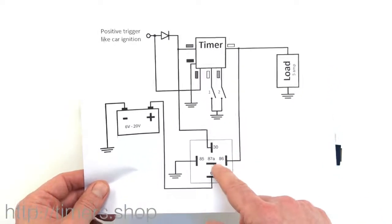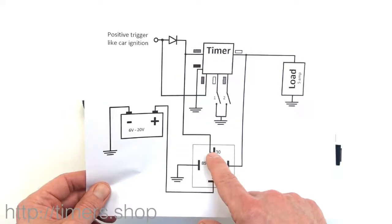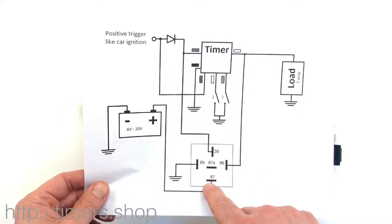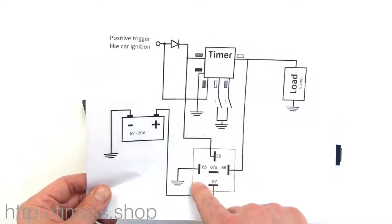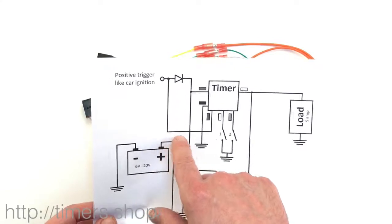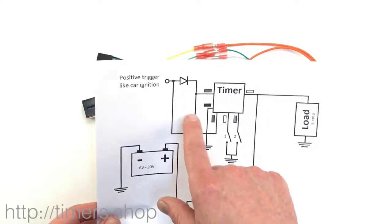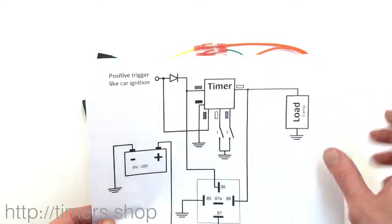When it disconnects, it disconnects the 87 and 30 so the power stops here. There's no power going anywhere and ignition is at zero, so nothing powers the timer. In this case you have zero voltage, zero current consumption.